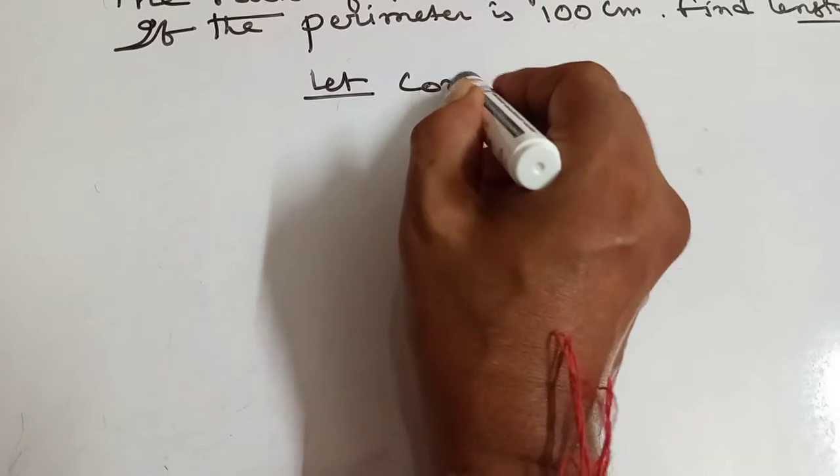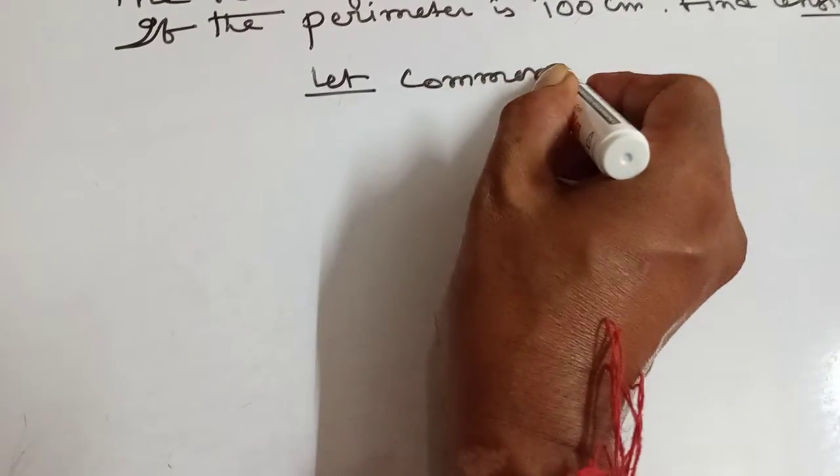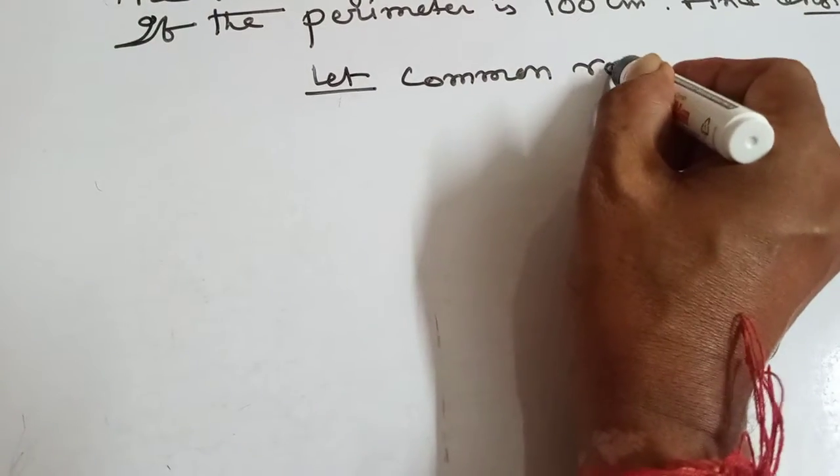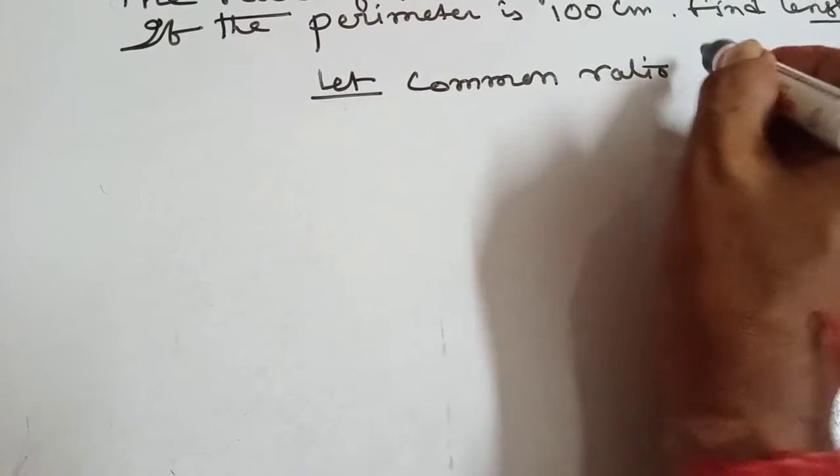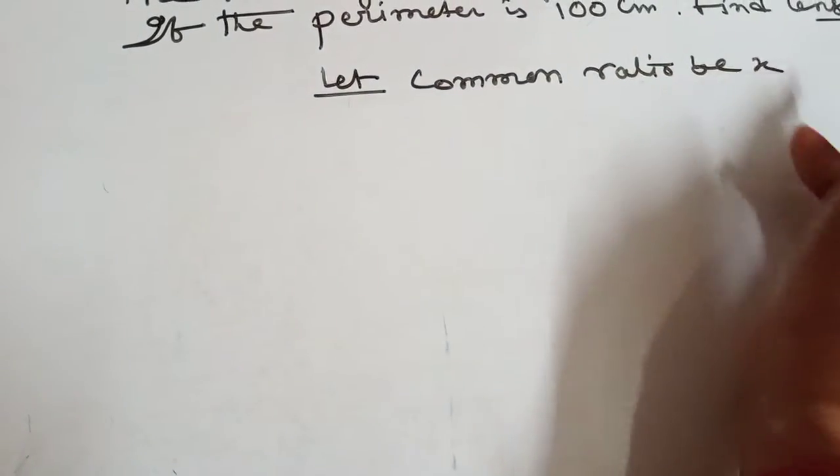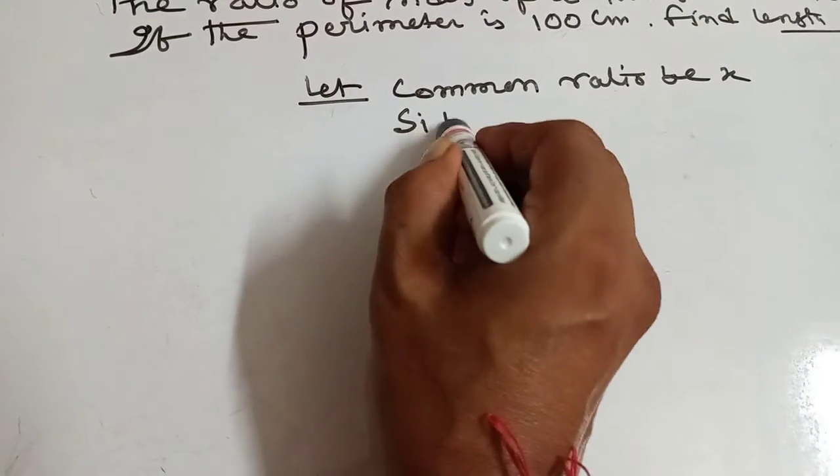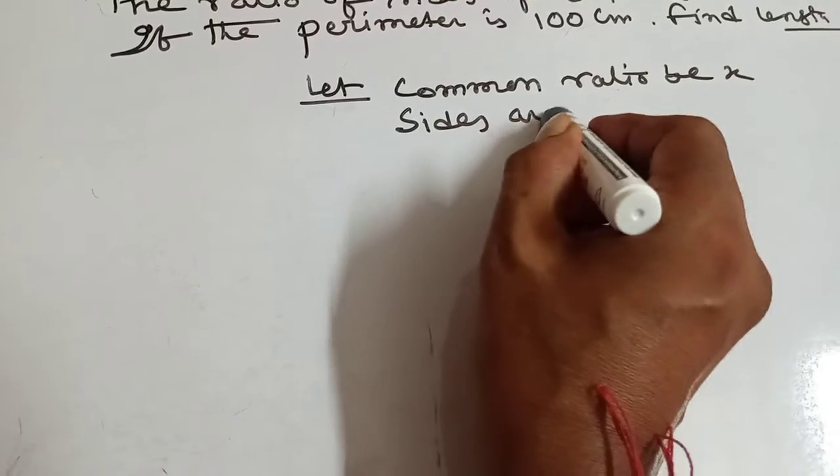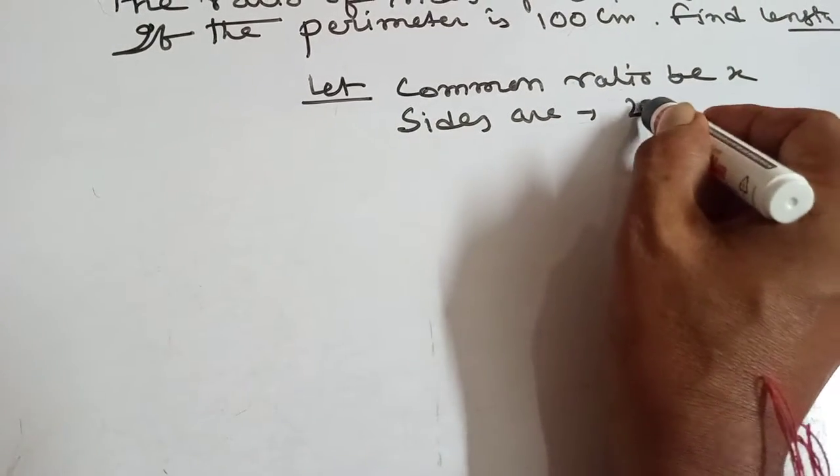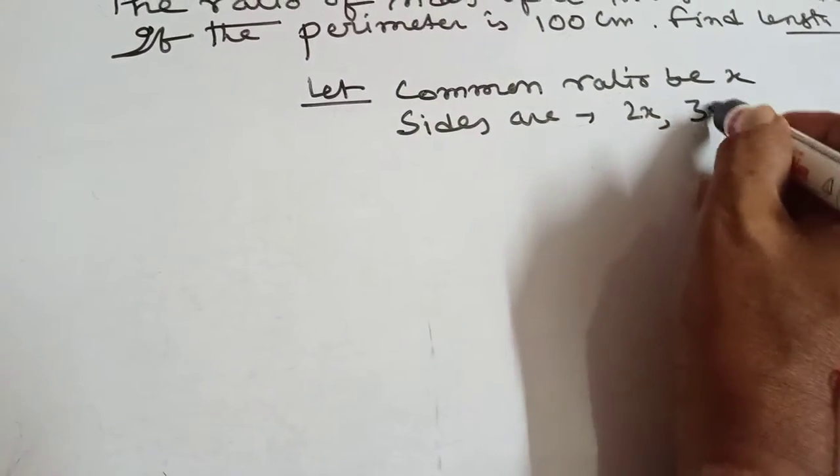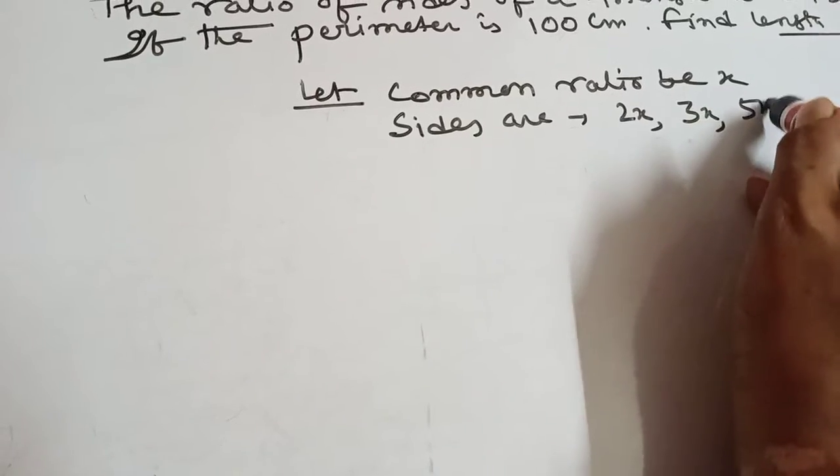Let the common ratio be x. The sides are 2x, 3x, and 5x.